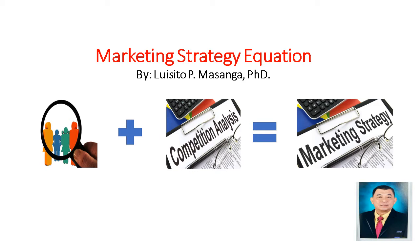So let us start. In this tutorial video, you can see that it's called an equation because there are two variables that you need to identify before you can do a marketing strategy. So number one is Customer Analysis. You have to conduct a Customer Analysis, and then the Competitor Analysis.